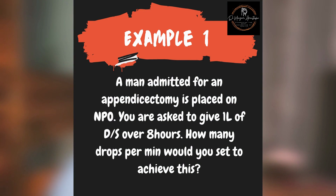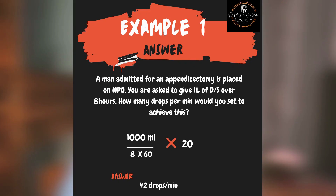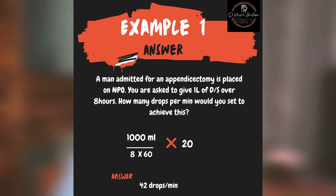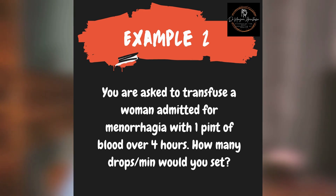A man admitted for an appendicectomy is placed on NPO. You are asked to give one liter of dextrose saline over eight hours. How many drops per minute will you set to achieve that target? Since we're giving one liter of dextrose saline over eight hours, that translates to 1000 mls over 8 times 60, multiplied by the drop factor of 20. The answer is approximately 42 drops per minute.